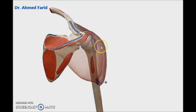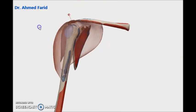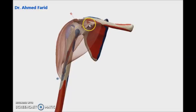The muscle converges to be inserted into the V-shaped deltoid tuberosity on the lateral aspect of the humerus. As you see, the muscle taking origin from clavicle and scapula and going to be inserted into the humerus, so the actions will be on the humerus — that is, movement of the humerus at the shoulder joint.